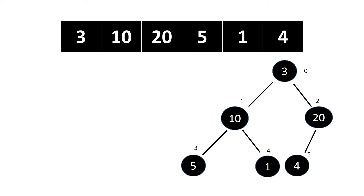Suppose we have an array of size six, and this is a heap created from that array. Our first task is creating a max heap. For creating a max heap we start from index two, because it is the last non-leaf element of the heap, and it contains a left child, right child, or both children.